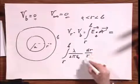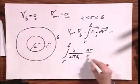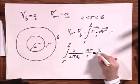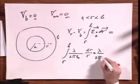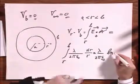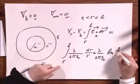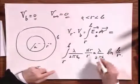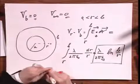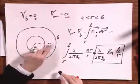Now this integral is the logarithm of R, taken between the value B and R. So this becomes lambda over 2 pi epsilon zero, times the logarithm of B, minus the logarithm of R, which is the logarithm of B over R. So that's the way that the potential changes from here to here.